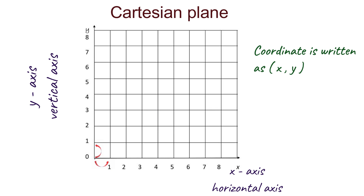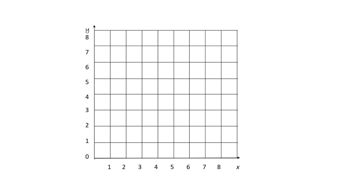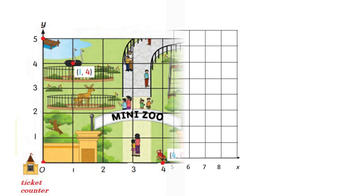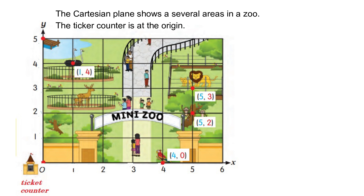To write the coordinates, write the coordinate of the X axis first, followed by the Y axis. Now look at this Cartesian plane. The Cartesian plane shows several areas in a zoo. The ticket counter is at the origin.